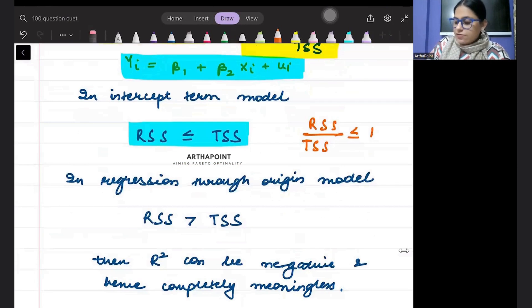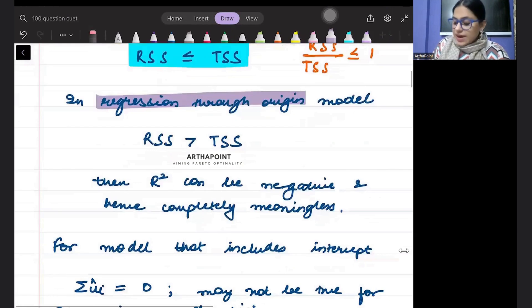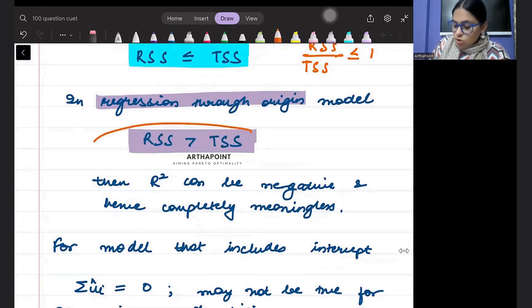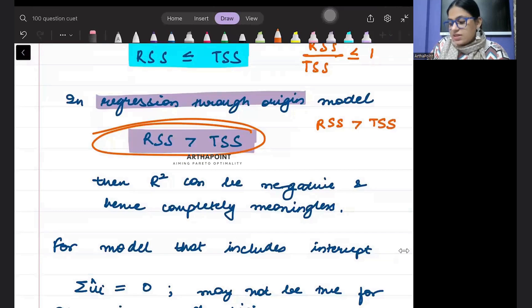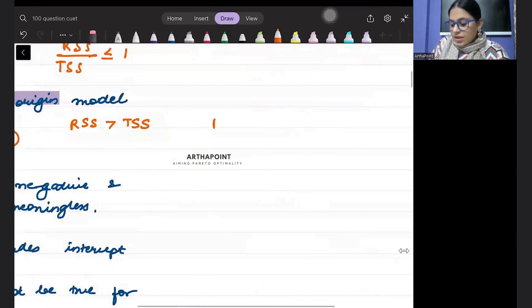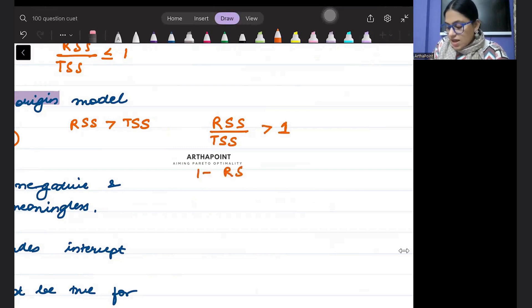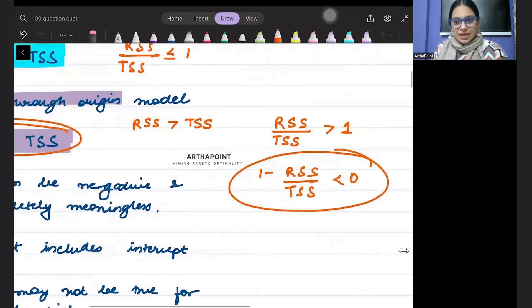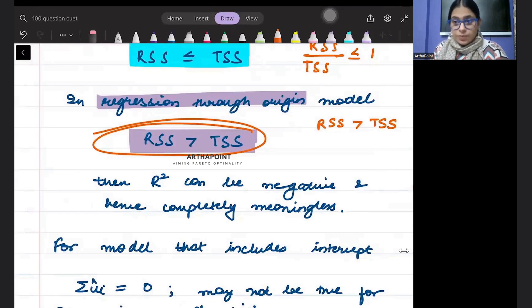But when we have regression through the origin, it is possible that RSS can be more than TSS also. It is very much possible that your RSS can be more than TSS. If your RSS is more than TSS, then RSS by TSS will be more than 1. So 1 minus RSS by TSS will become negative. If it will be negative, it will lose its value, its meaning.